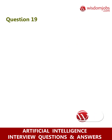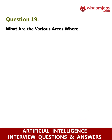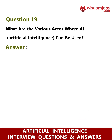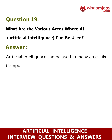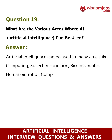Question 19: What are the various areas where AI (artificial intelligence) can be used? Answer: Artificial intelligence can be used in many areas like computing, speech recognition, bioinformatics, humanoid robot, computer software, space and aeronautics, etc.